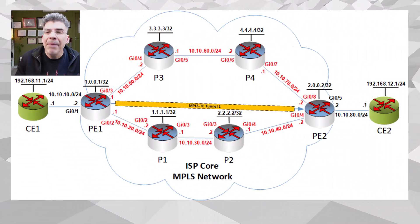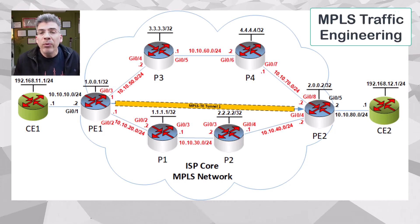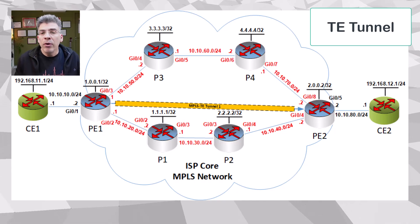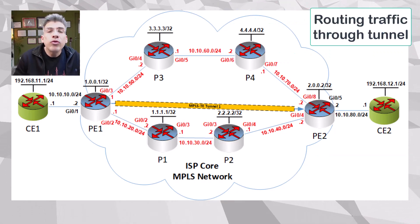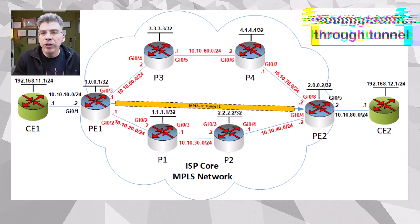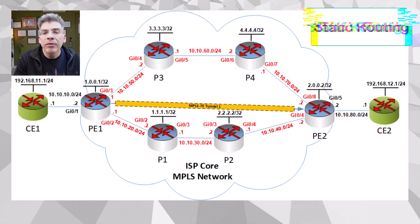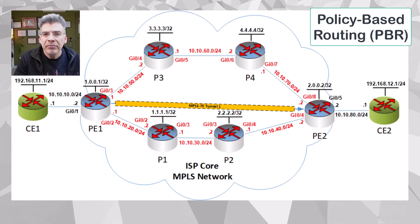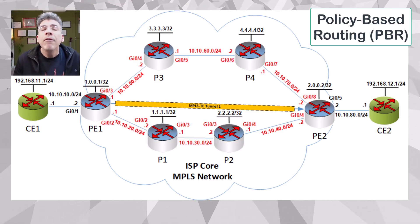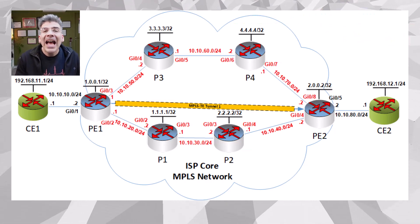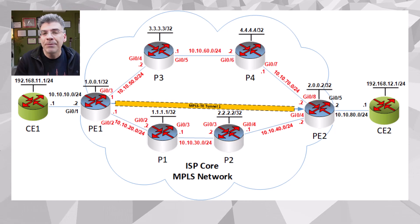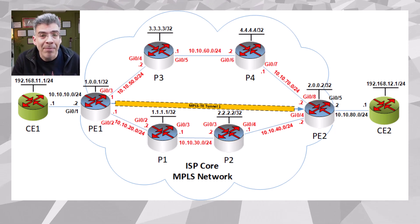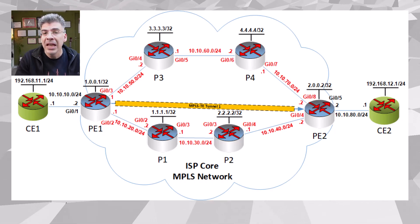Over the past few videos we have been looking at MPLS traffic engineering, and we established a TE tunnel across our topology. We've been exploring various ways to route traffic down our tunnel — we've looked at static routing, a couple of auto-route features, as well as policy-based routing. Take a look at the description below for links to those videos, or check out the MPLS playlist to see a fuller listing of all the MPLS topics we've covered so far.